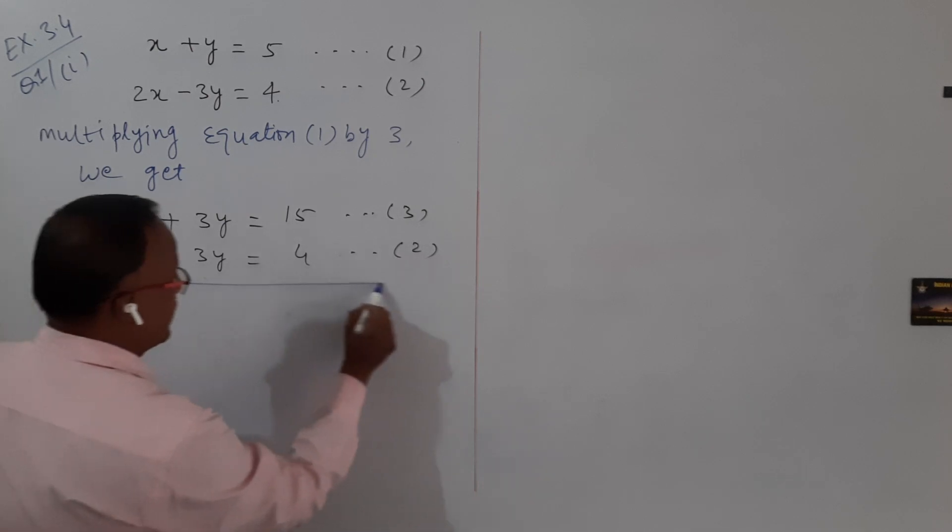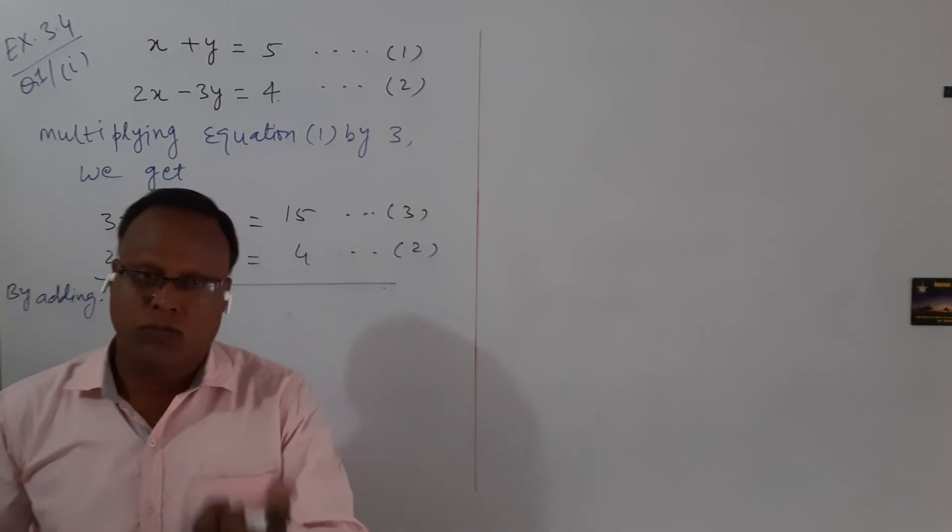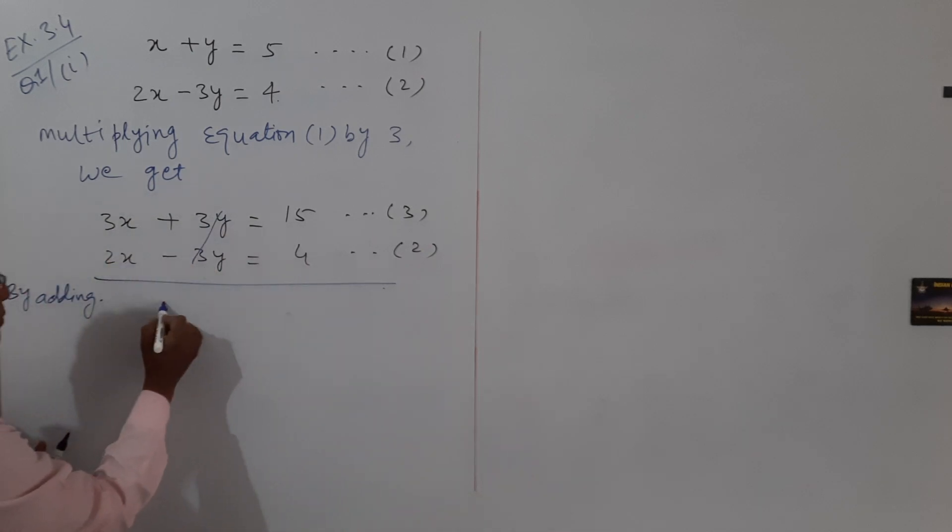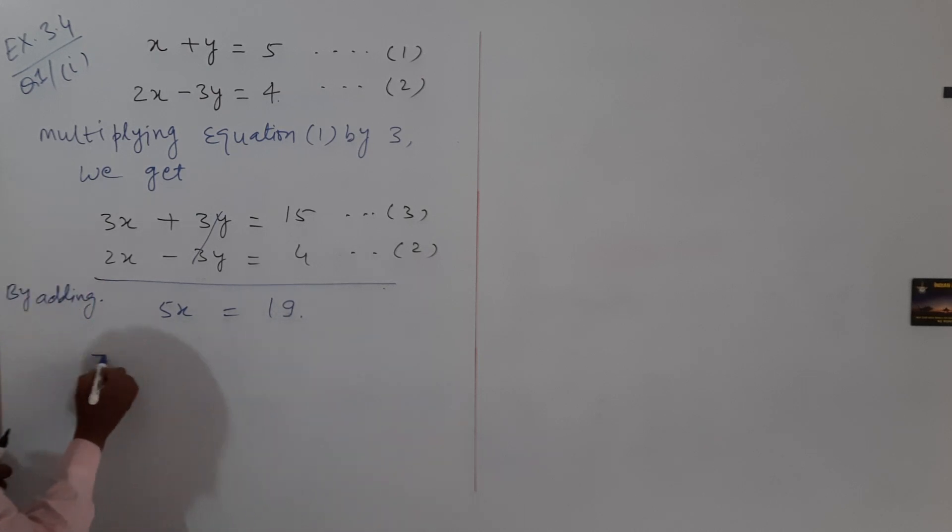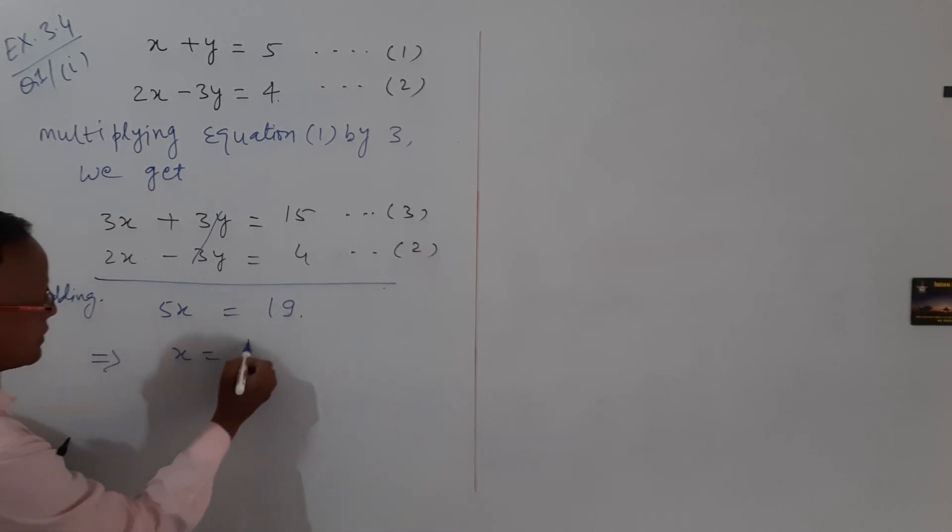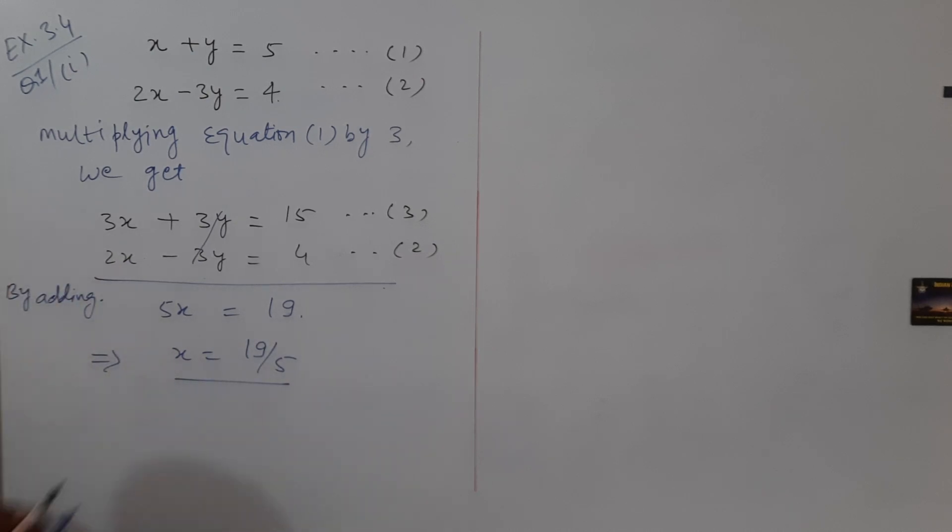Now by adding equations 3 and 2, we get—this cancels—3x plus 2x becomes 5x equals 19. This implies x equals 19 by 5, which is the value of x.